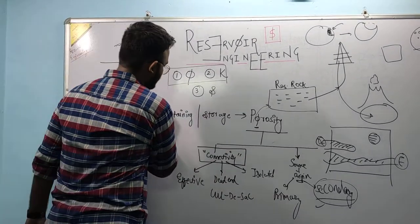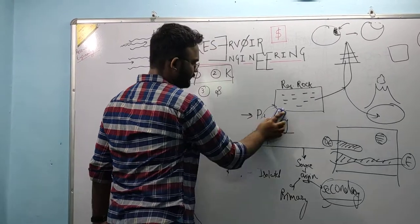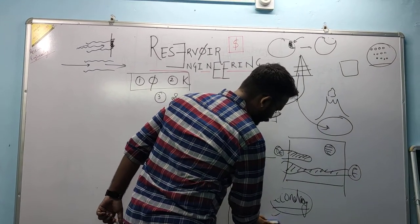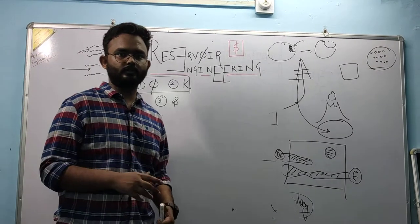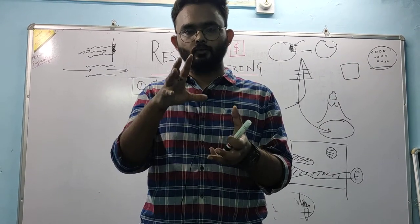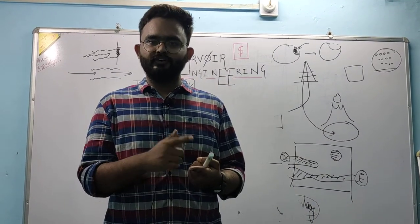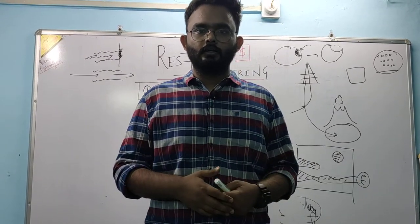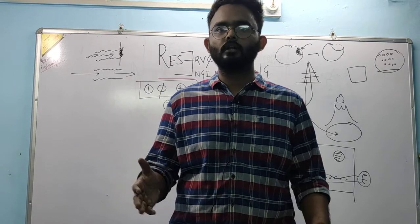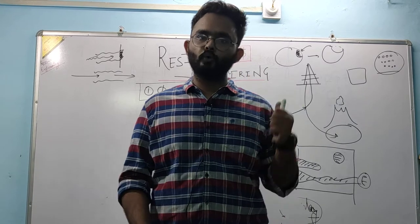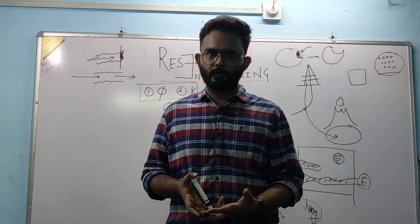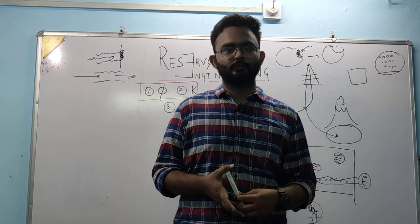Now let's talk about permeability. The feel of what porosity is very important before you write definitions down. Going back to the sponge example: if you cover the wet sponge with a polythene bag and try to crush it, the water does not come out — there is a lack of flowability of the fluid. This feeling is called permeability: the ability with which a rock allows or does not allow fluid to flow through it. Permeability is more important than porosity — it is the only phenomenon that will allow the fluid to flow. In the next part, we will be covering permeability in detail. Thank you, this is Divyanshu Vyas.